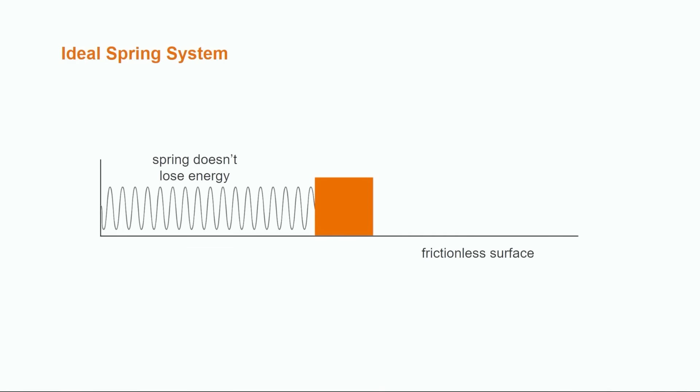Let's start by taking a look at a simple, ideal spring system. Here we have a spring attached to a vertical surface at one end and an object at the other. For the purposes of this video, we're going to assume that the surface is frictionless. We'll also assume that the spring doesn't lose energy when it's stretched or compressed. Before a spring is compressed or stretched, we consider it to be in equilibrium. This is important because we'll use the equilibrium position to determine how far the spring is stretched or compressed.